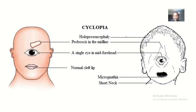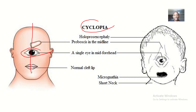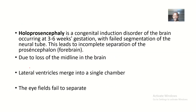Holoprosencephaly is also known as cyclopia. Cyclopia is basically a feature of holoprosencephaly, where there is failure in separation of the midline, and cyclopia means that you have one eye. I remember when I was young I watched a Greek movie titled Cyclops — the big giant had just one eye — and that's what actually helped me understand this.